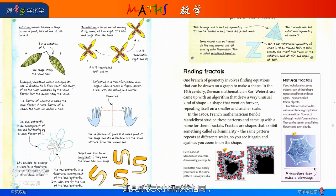Shapes are said to be congruent if they have the same size and shape.